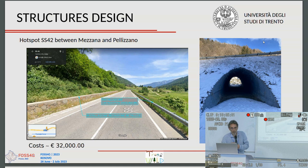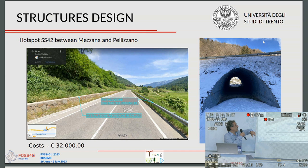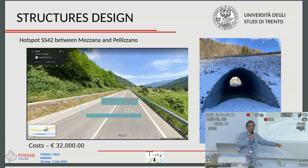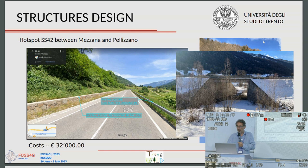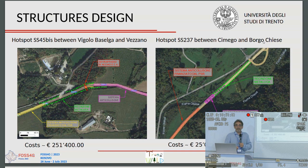The first example is the hotspot between Mezzana and Pelizzano. Here the proposed intervention is only fencing — relatively low cost at 32,000 euros — because existing underpasses are already present; not one but two underpasses will be utilized. This is accompanied by additional interventions like installation of fences and light reflectors.